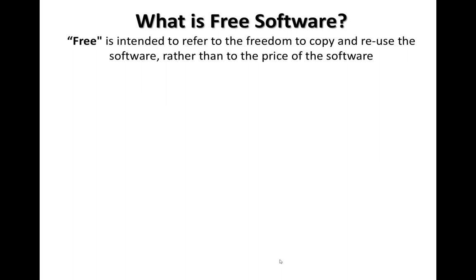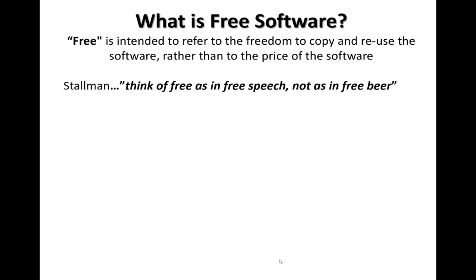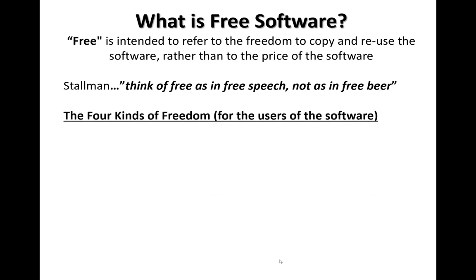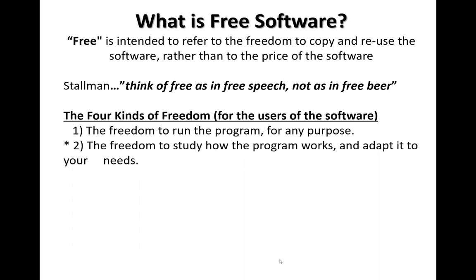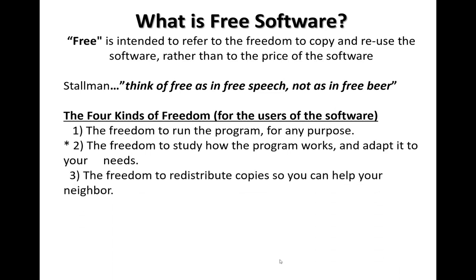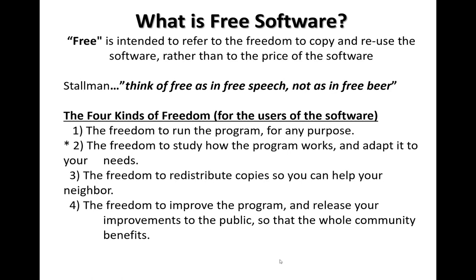What is free software? Free is intended to refer to the freedom to copy and reuse the software rather than the price in dollars. Stallman famously said, think of it as in free speech, not as in free beer. He came up with four kinds of freedom for software users: the freedom to run the program for any purpose; the freedom to study how the program works and adapt it to your needs; the freedom to redistribute copies so you can help your neighbor; and the freedom to improve the program and release your improvements to the public so the whole community benefits.